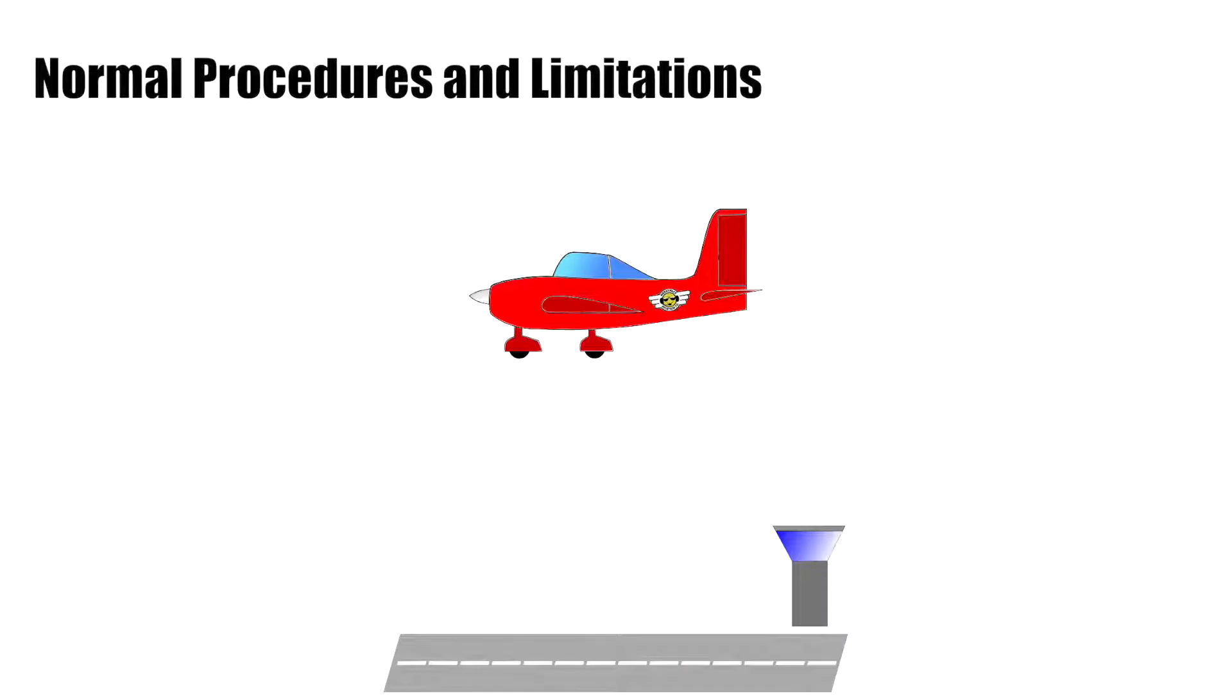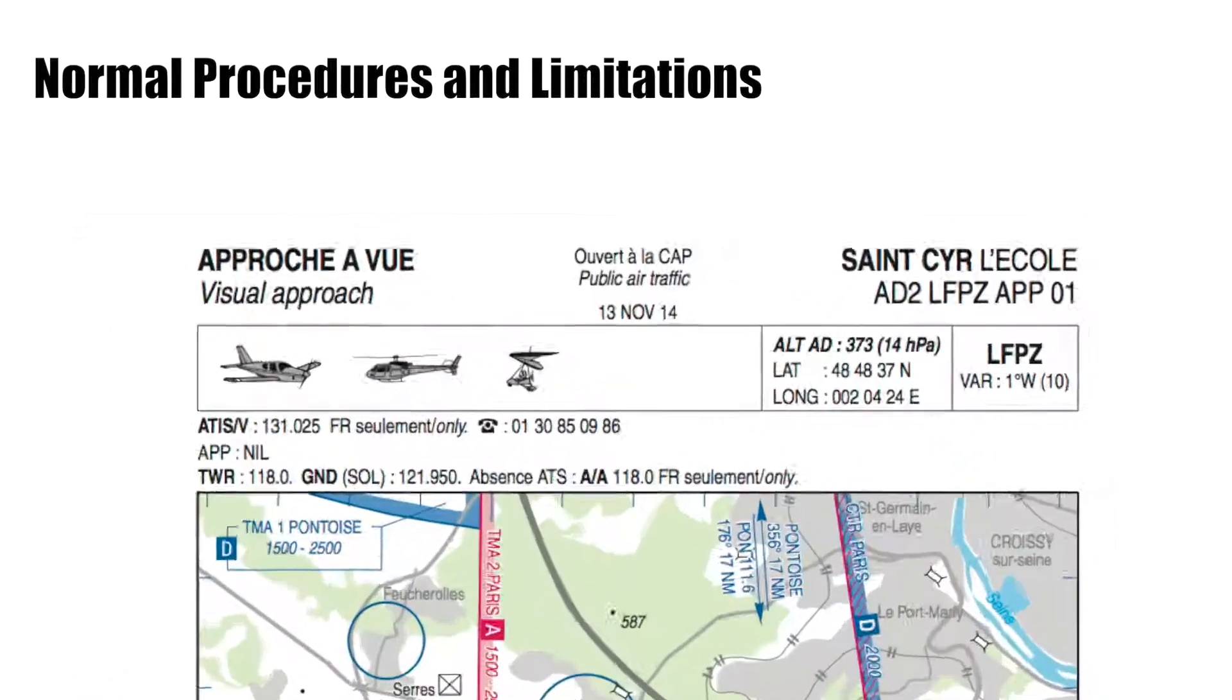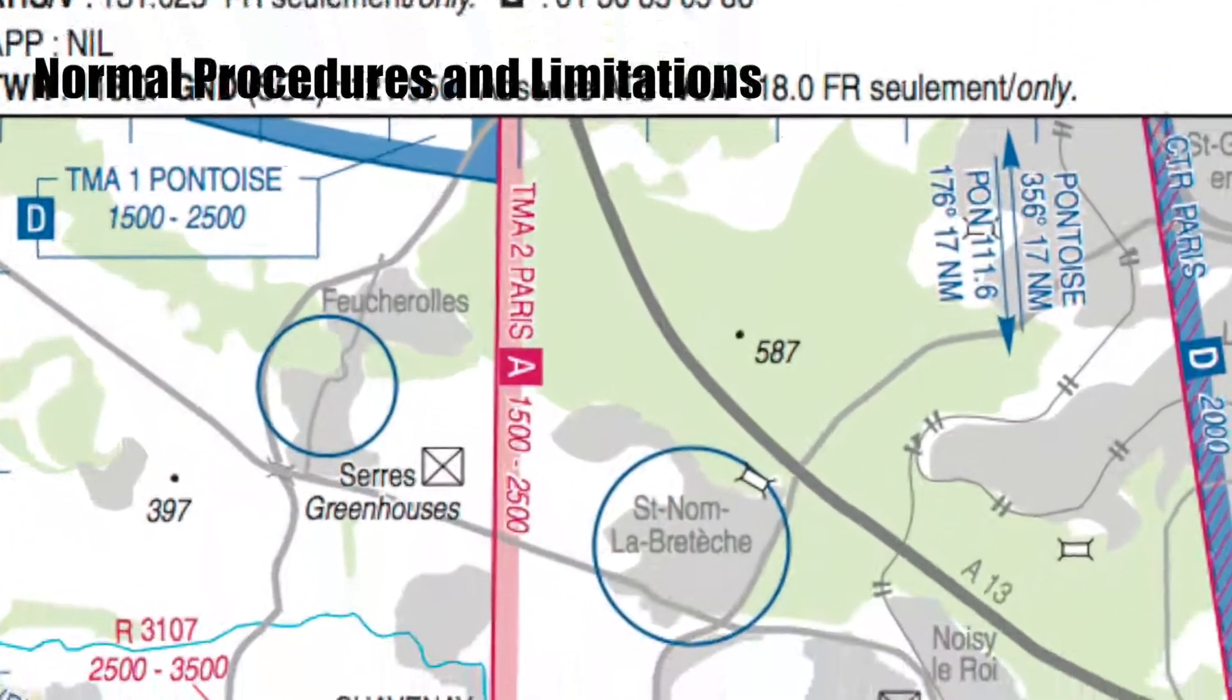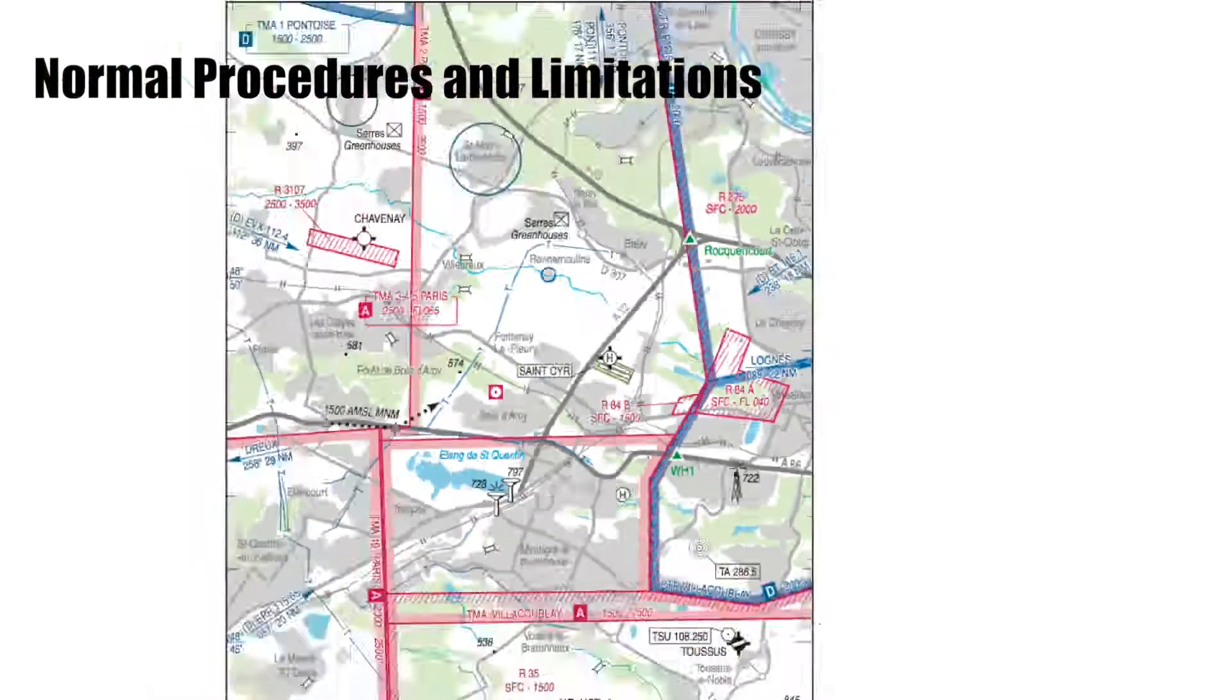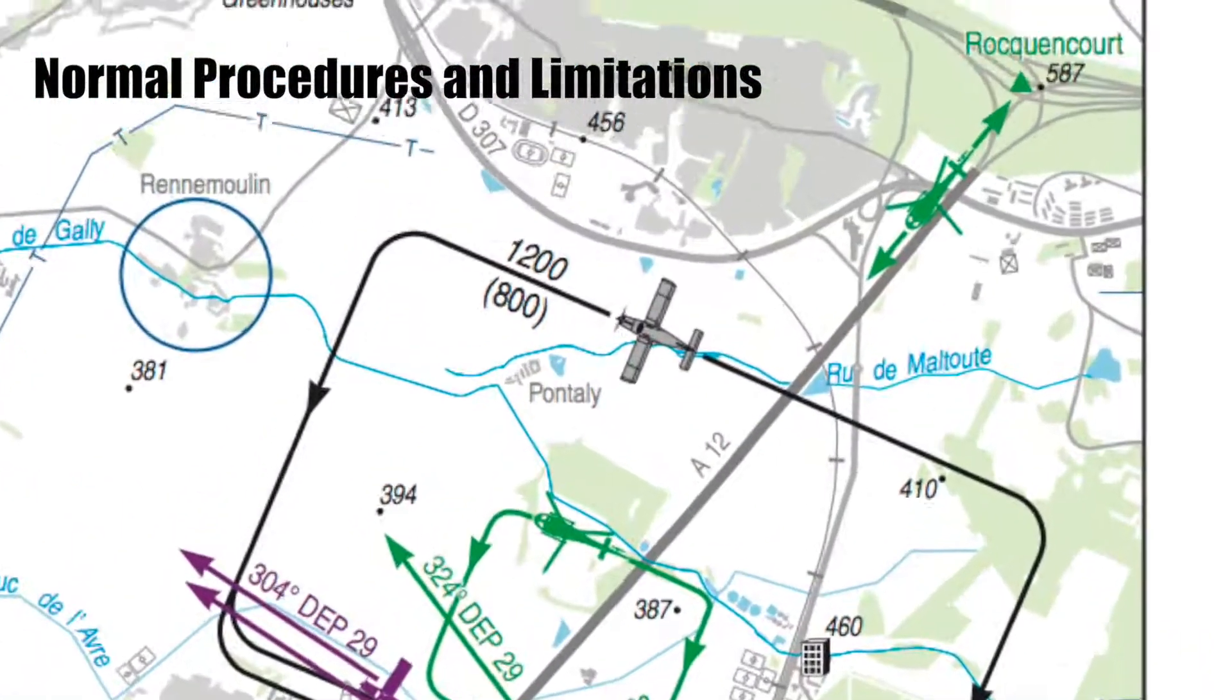Now, normally the traffic pattern is done at 1000 feet above airfield elevation. However, it's not always possible. One example is Saint-Cyr-l'Ecole, where it has a Class A airspace right above the airfield, limiting the traffic pattern to 800 feet above ground level.